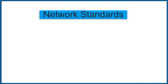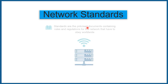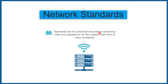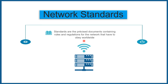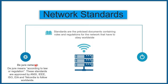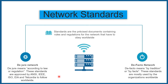Now let's discuss some network standards. Standards are precise documents containing rules and regulations for the network that have to be obeyed worldwide. Standards are divided into two parts. The first is de jure network — de jure means according to law or regulation. These standards are approved by organizations such as ANSI, IEEE, ISO, EIA, and TIA to be followed worldwide.